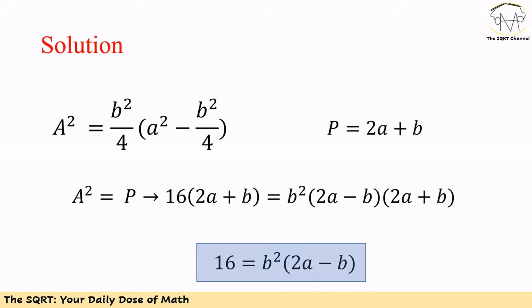If we use what we have, then we're going to end up with 16 times 2a plus b equals b squared times 2a minus b times 2a plus b. We have 2a plus b on both sides, we're going to remove that because 2a plus b cannot be 0. Then we're going to have 16 is equal to b squared times 2a minus b.